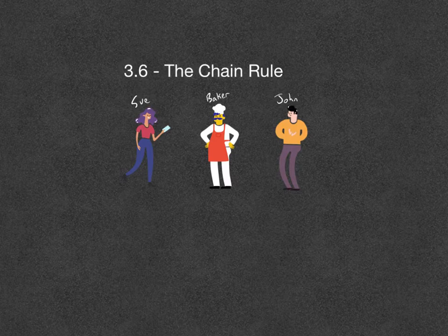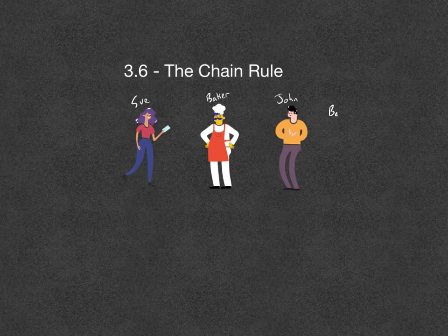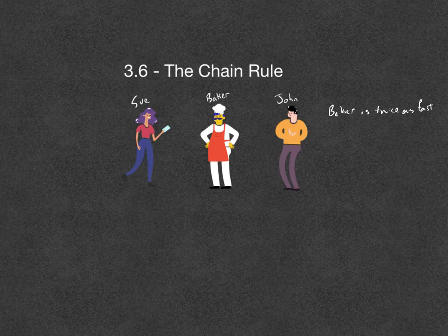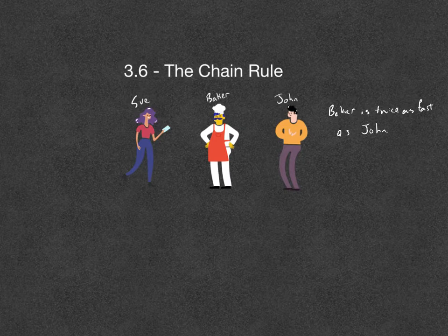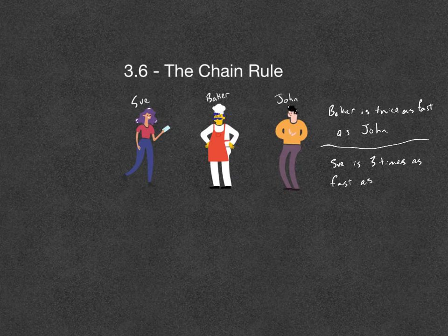In this example, we're going to be looking at three people: Sue, a baker, and John. These are just people I picked that were built into my app. Let's say for no good reason they're all running a race. The baker is twice as fast as John — John is slow. And Sue is three times as fast as the baker.